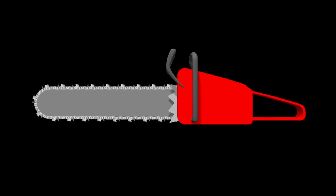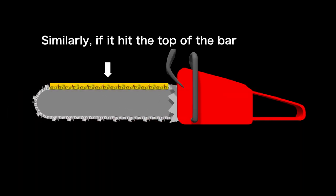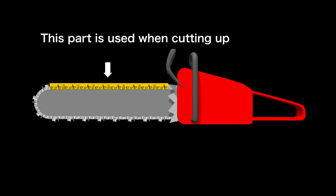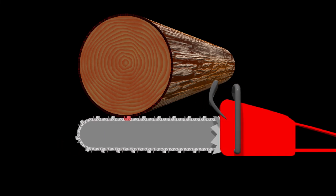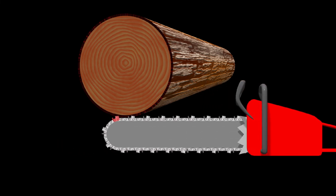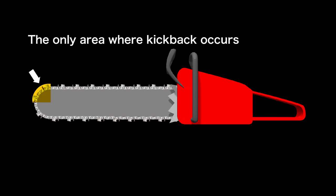Similarly, if it hit the top of the bar — the part often used when cutting from the bottom upward — the force acts as if it's being pushed backward. As you can see, the only area where kickback occurs when it hits the log is the upper half of the tip.